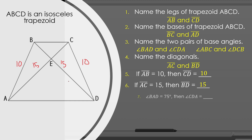Number seven, if angle BAD is equal to 75 degrees, then angle CDA is equal to what? Since we know that they are base angles, they are congruent. Therefore, if angle BAD is equal to 75 degrees, then angle CDA is equal to 75 degrees as well.